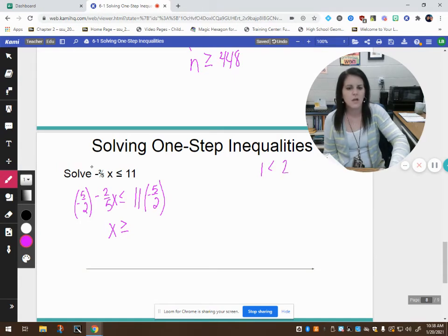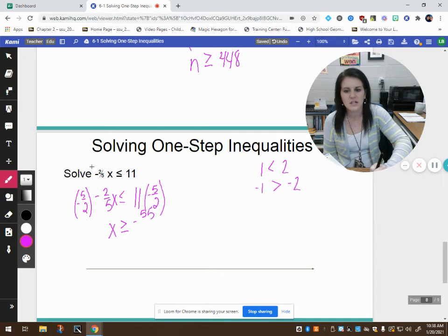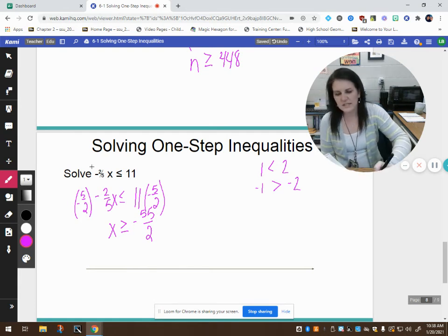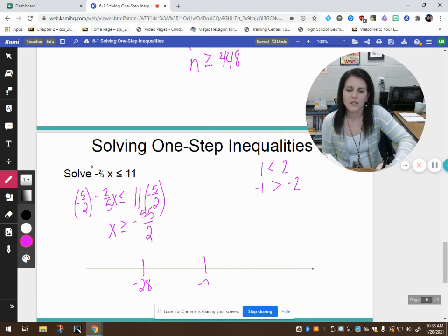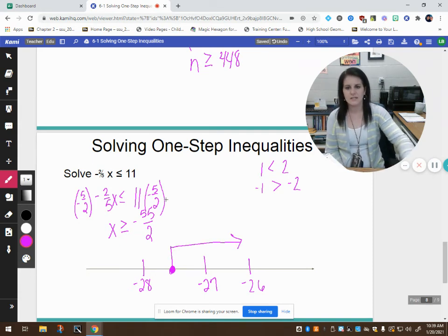I want you to think about why that is. Let's say I have 1 and 2. We know that 1 is less than 2. Let's just multiply them both by negative 1. Negative 1 and negative 2. Now which one is bigger? Obviously my negative 1 is bigger than my negative 2. So that is why when I multiply both sides by a negative number I have to change the direction of the inequality symbol. So 55 over 2, we know 55 divided by 2 is 27.5. So I've got negative 27.5. So I've got negative 28, negative 27, negative 26. So negative 27.5 is right here in the middle. We're including this point and we want all the values of x greater than that.